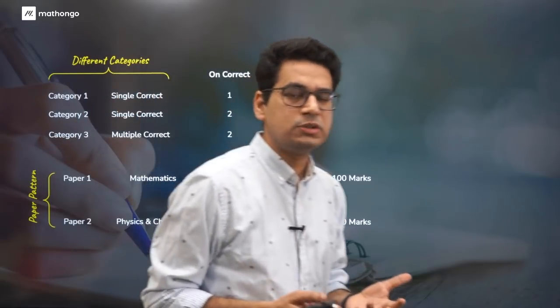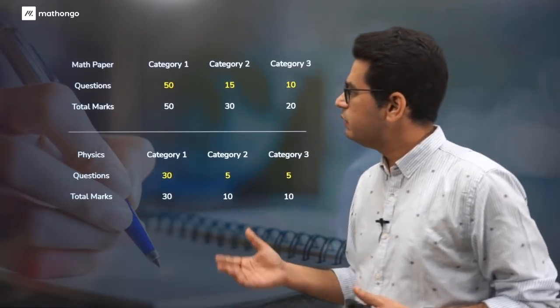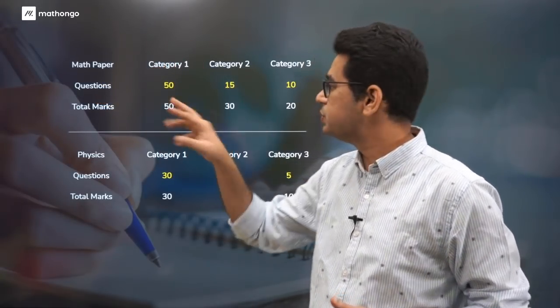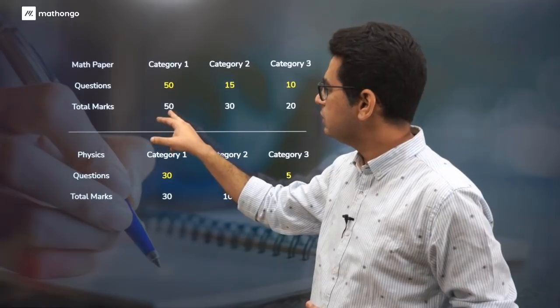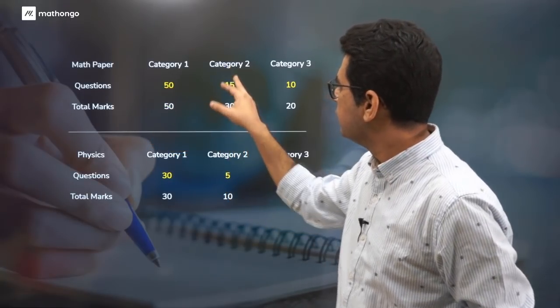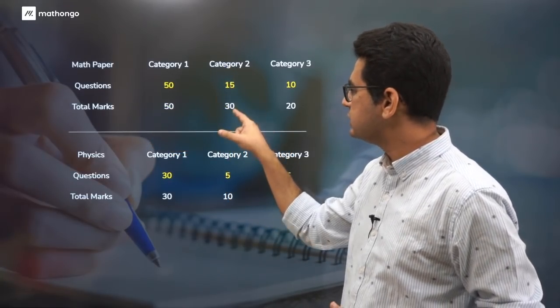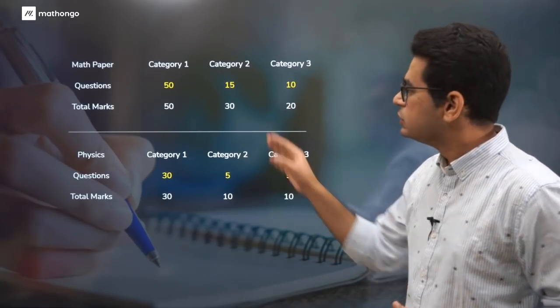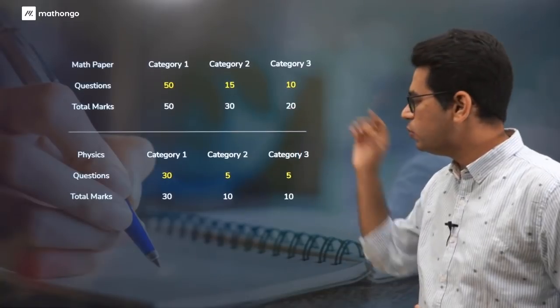Now if we see the paper pattern, there are two papers. Mathematics is taken separately, which is given very high weightage, 50% weightage, because there will be 75 questions in maths and 80 questions in physics and chemistry combined. It's a 2-hour exam with a 1-hour break in between, so a total of 5-hour exam. You need stamina for the paper. It's 100 marks for math and 100 marks for physics and chemistry, so 200 marks total.